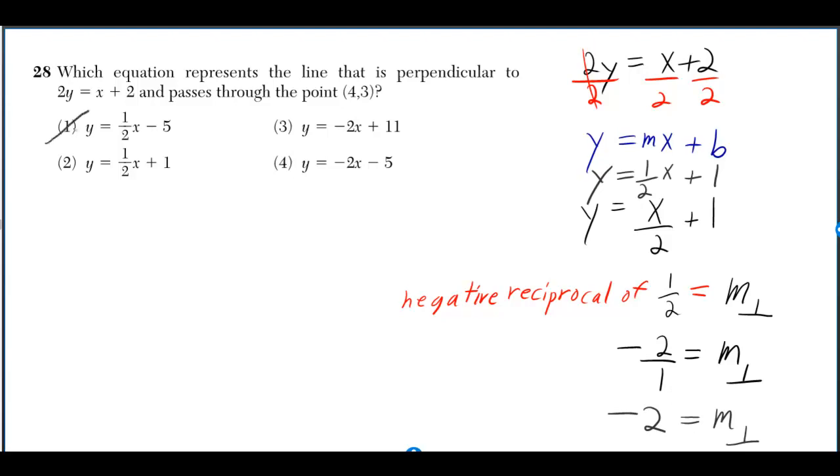So that means our answer is either going to be 3 or 4, as they both have negative 2 for their slope. And we have to make sure that the line contains the point (4, 3).